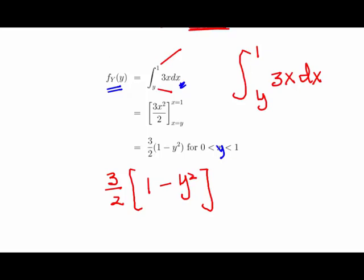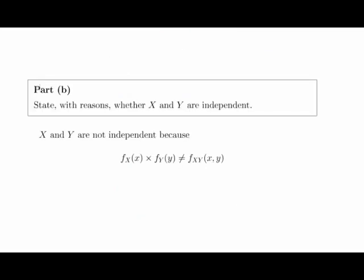The next question asks us to state with reasons whether x and y are independent. This is straightforward: x and y are not independent because when you multiply the marginal PDFs together, they do not give you the joint density function.